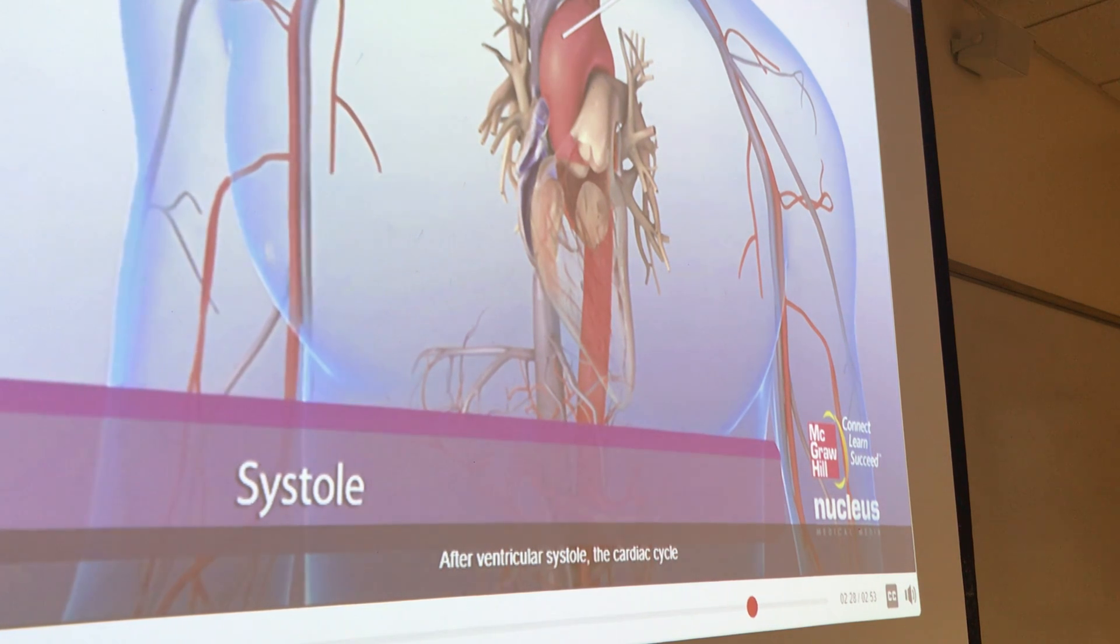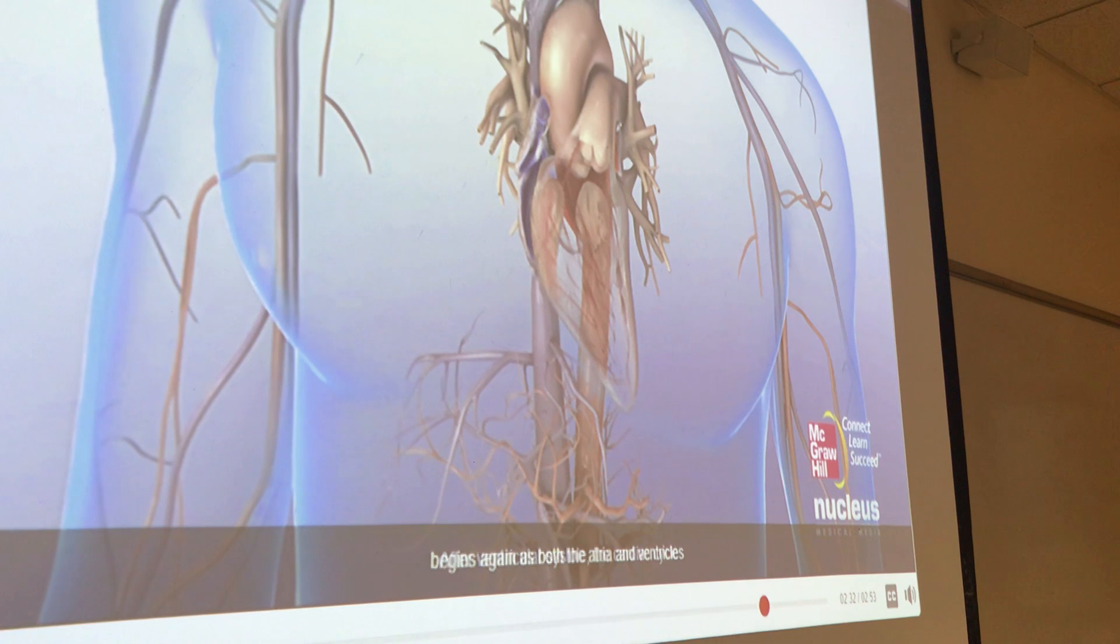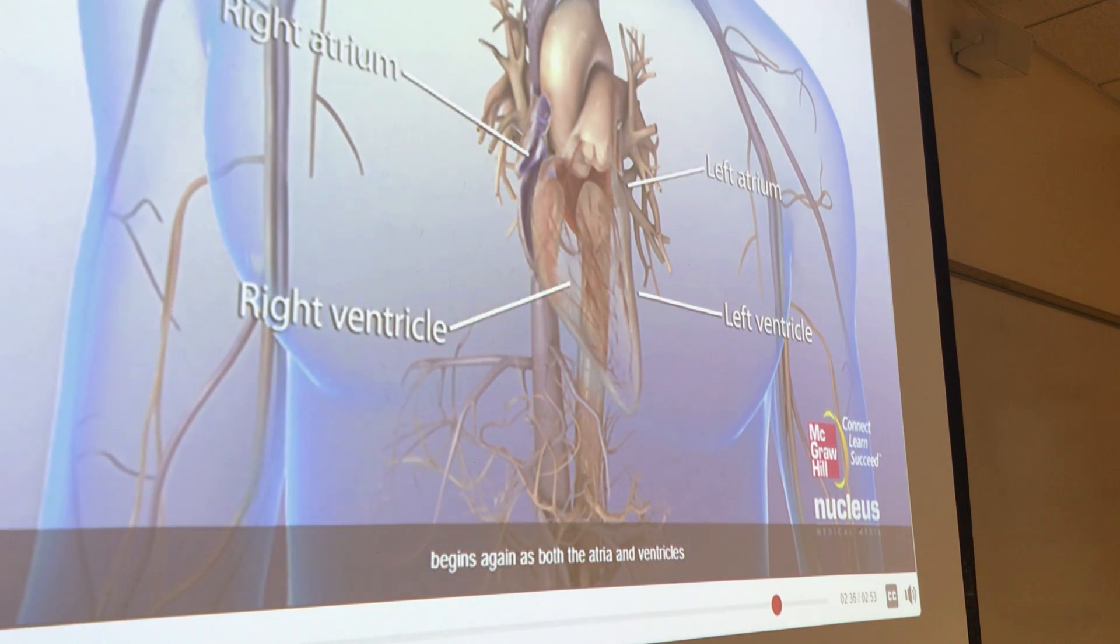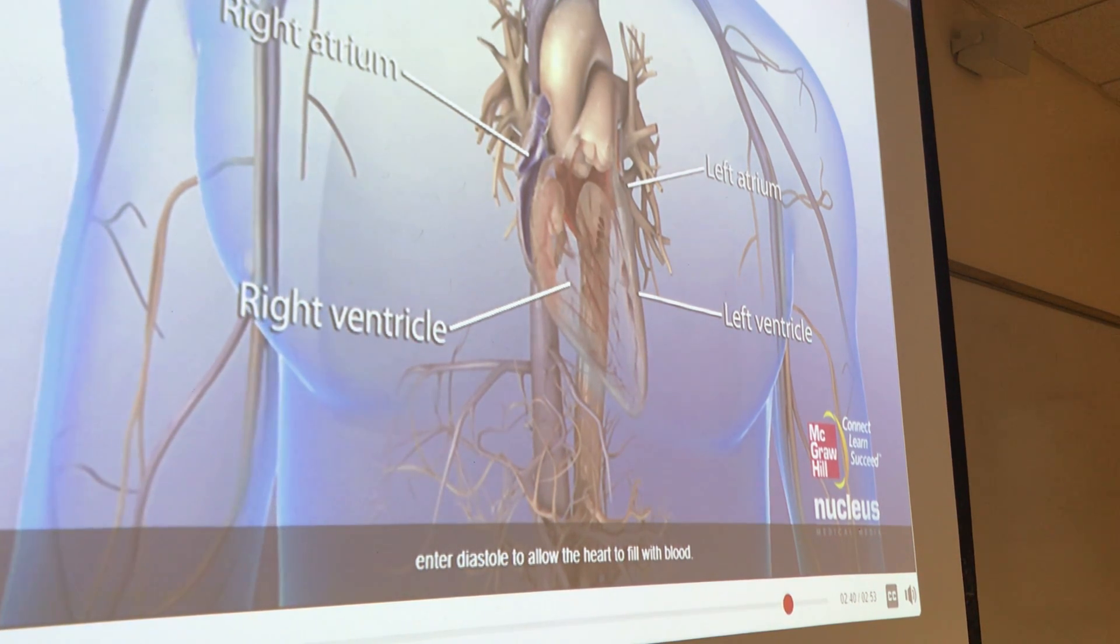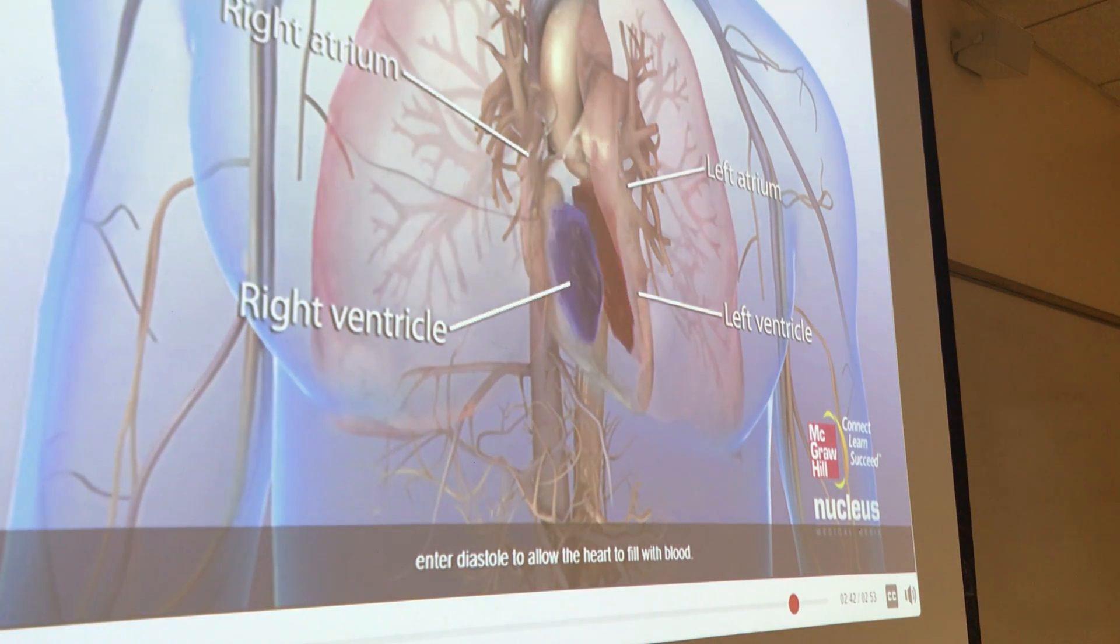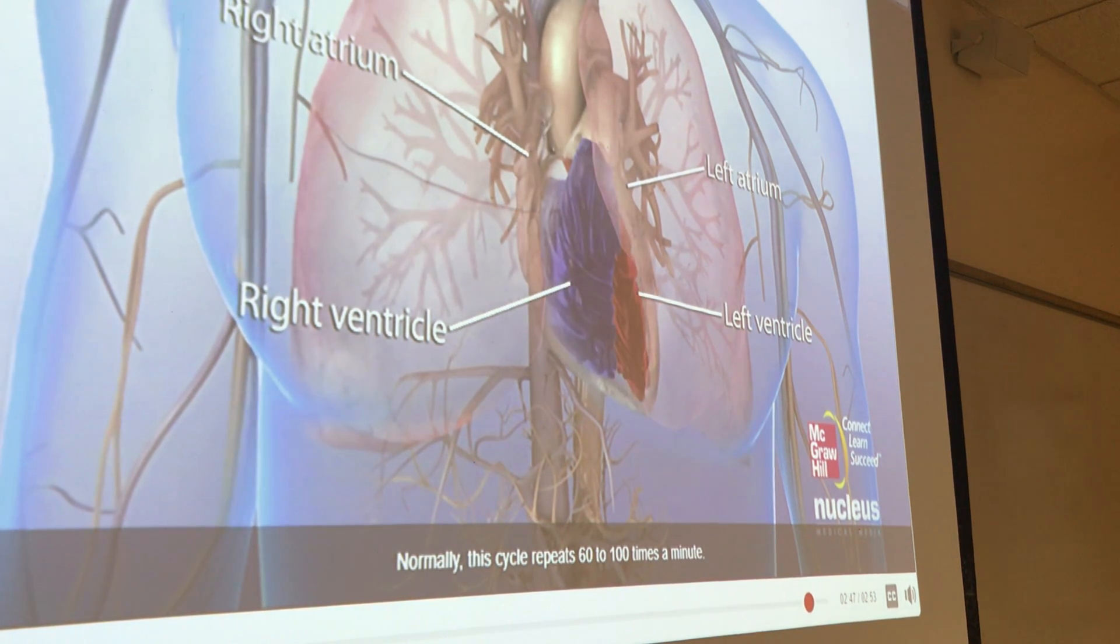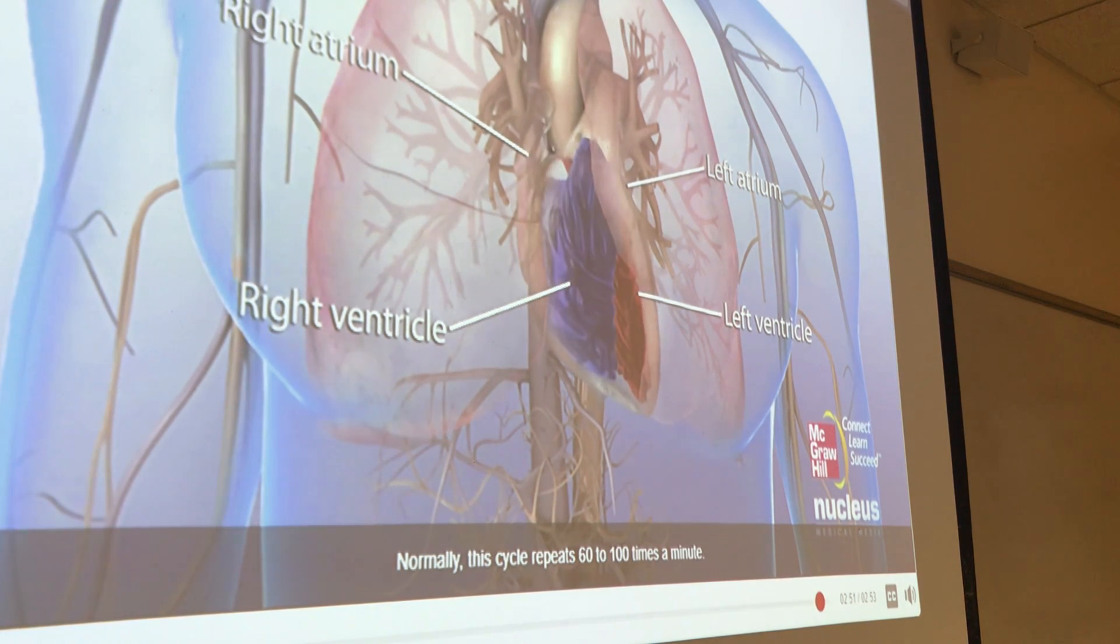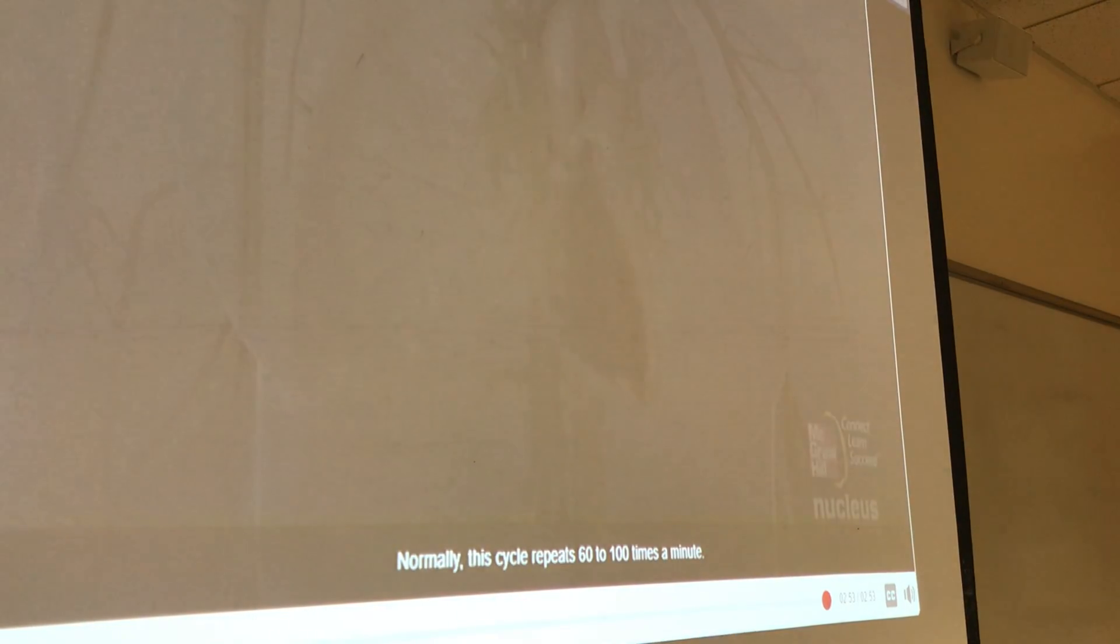After ventricular systole, the cardiac cycle begins again as both the atria and ventricles enter diastole to allow the heart to fill with blood. Normally, this cycle repeats 60 to 100 times a minute. It's not a bad video, right? It kind of talks slow, so it's the only thing. You can process it.